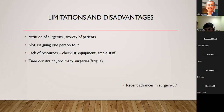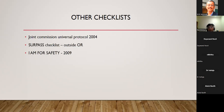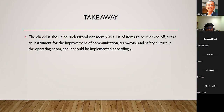There are other checklists previously used — the Joint Commission Universal Protocol and the Surpass checklist (Surgical Patient Safety Checklist), which covers from patient admission to discharge, and the 'I am for safety' checklist. The takeaway message: the checklist should be understood not merely as a list of items to check off, but as an instrument for improving communication, teamwork, and safety culture in the operating room, and should be implemented accordingly.